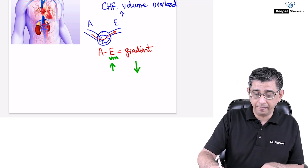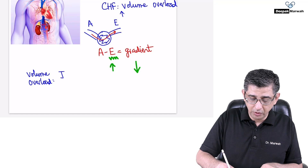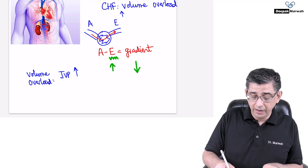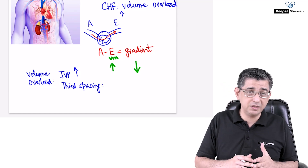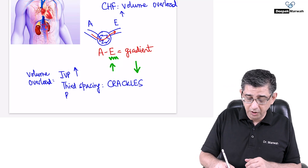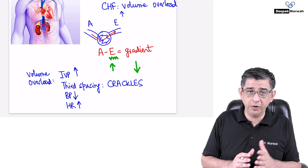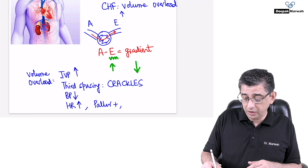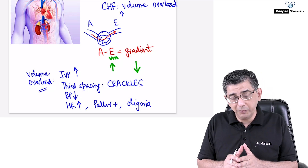In any volume-overloaded patient, the JVP may not fall with inspiration — the column shoots through the roof. Third spacing occurs: increased hydrostatic pressure in blood vessels contributes to pulmonary edema, so you'll hear crackles. Left ventricular malfunction causes hypotension, and compensatory mechanisms increase heart rate — maximum heart rate being 220 minus age. Because the kidney is involved chronically, there may be pallor, decreased urine output reported by the patient or noticed on input-output monitoring.